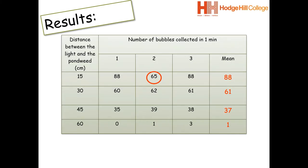This set of data has been collected from a required practical that someone has carried out. So what can we notice? Well, there's a number that's clearly circled in red. And the reason for this is that this number is an anomaly or an anomalous result. If you look at the other two repeats for that 15 centimetre distance, we can see that they're quite similar, 88 and 88. However, 65 stands out like a sore thumb.